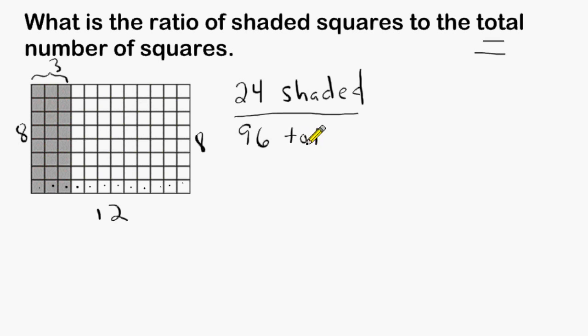So we can say that 24 squares are shaded compared to 96 total squares. Because 24 and 96 share the greatest common factor of 24, dividing both numbers by that greatest common factor will give us our final answer of one shaded square for every four total.